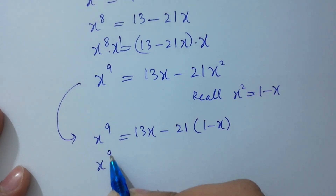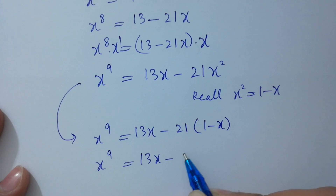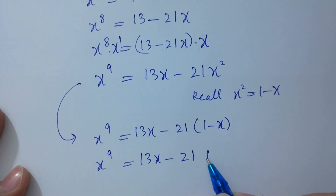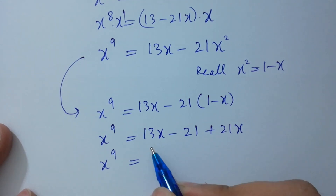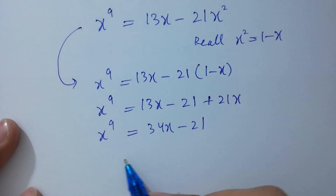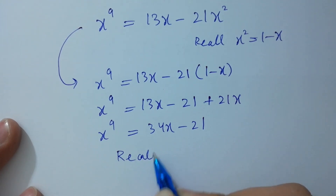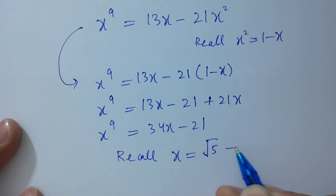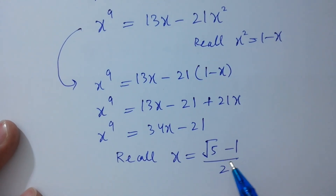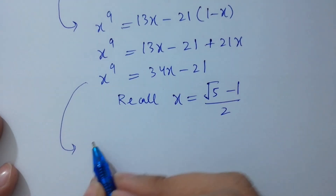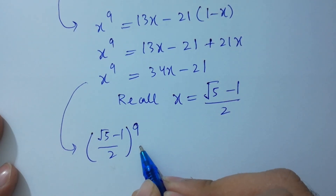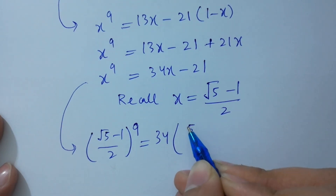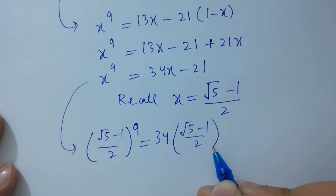So x to the power 9 equals 13x minus 21 times (1 minus x), which gives 13x minus 21 plus 21x. Combining: 13x plus 21x is 34x, so x to the power 9 equals 34x minus 21. Recalling x equals (square root of 5 minus 1) over 2, we substitute back: x to the power 9 equals 34 times (square root of 5 minus 1) over 2, minus 21, which simplifies to 17 times (square root of 5 minus 1) minus 21.